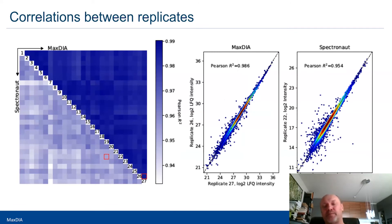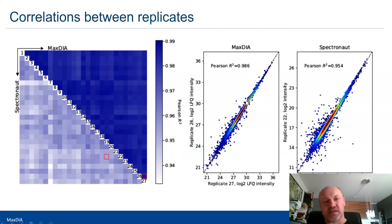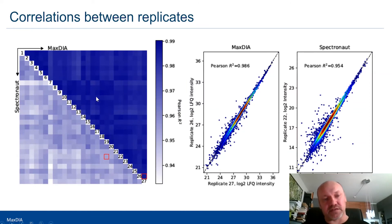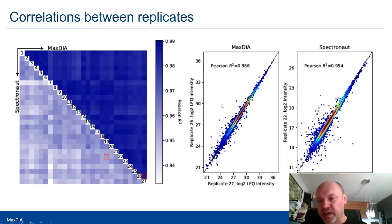For correlation between replicates, rather than picking two favorable replicates we took all pairwise comparisons and made a heat map. The Pearson R-squared is shown in the upper triangle for MaxQuant and lower triangle for Spectronaut. This systematically shows — not just from a favorable comparison — that we have higher Pearson correlation between the label-free quantification intensities.